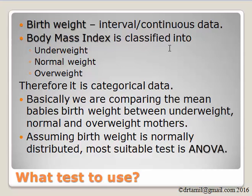Body mass index, since it is classified into underweight, normal weight, and overweight, is categorical data. So what we are doing is comparing the mean birth weight of babies between underweight, normal, and overweight mothers. If the birth weight is normally distributed, the most suitable test would be ANOVA.